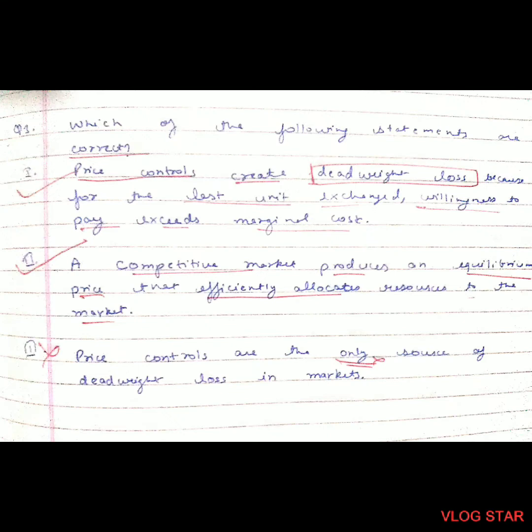Question 3: Which of the following statements are correct? First: price controls create deadweight loss because for the last unit exchanged, willingness to pay exceeds marginal cost. Second: a competitive market produces an equilibrium price that efficiently allocates resources to the market. Both the first and second statements are correct. The third statement — that price controls are the only source of deadweight loss — is not correct, because other sources like externalities and monopoly markets also exist.